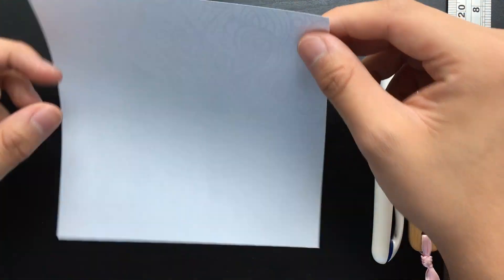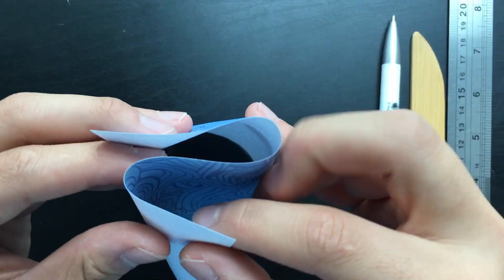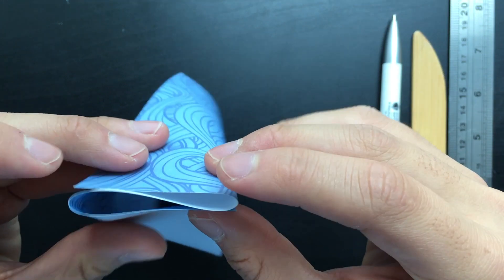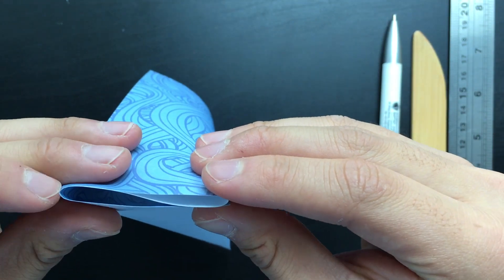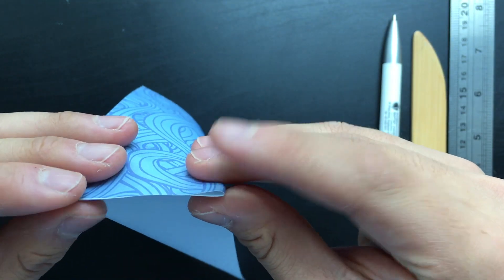What you want to do first is divide the paper into three equal segments and the easiest way to do that is by approximating and adjusting. Origami masters do it all the time so don't feel bad.